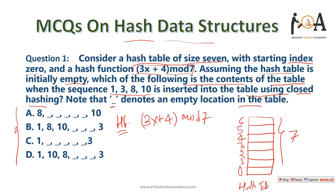Let's start with element 1. Substitute x = 1 into the hash function: (3×1 + 4) mod 7 = 7 mod 7 = 0. So element 1 is inserted at index 0.